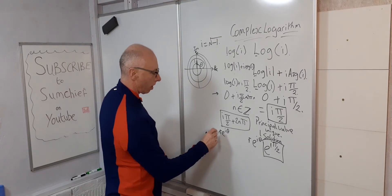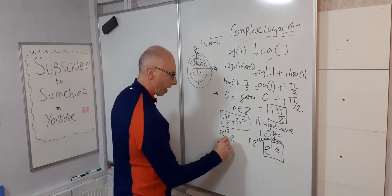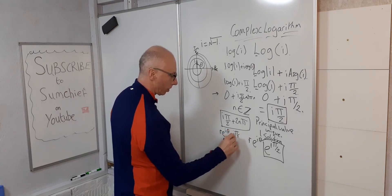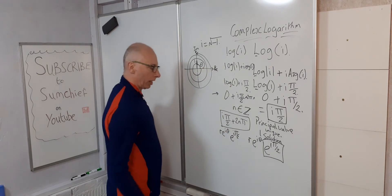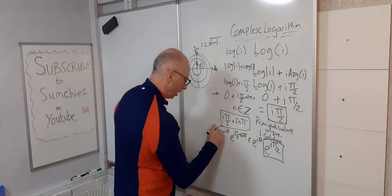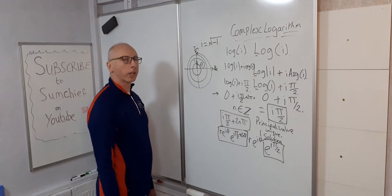R, and e, and i carry on the same. R is still 1. So, we don't write anything for that. E to the i, pi over 2. And we add on 2n pi. And that gives us infinite solutions. Okay, thanks for watching.